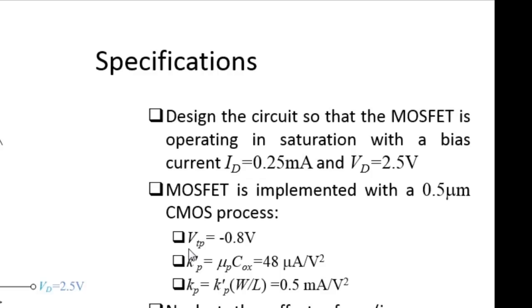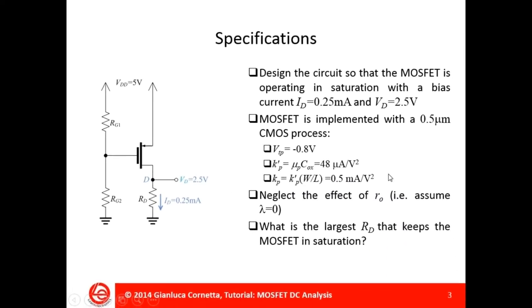The MOSFET transistor has VTP equal to minus 0.8V, a process transconductance Kp prime equal to 48 µA per square volt, and the transconductance parameter Kp equal to 0.5 mA per square volt. I am also assuming no channel length modulation, so that the MOSFET transistor channel resistance RO is infinite.